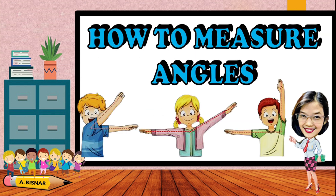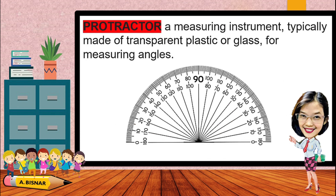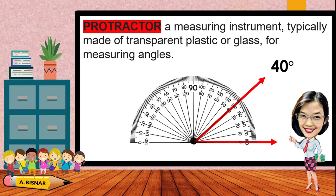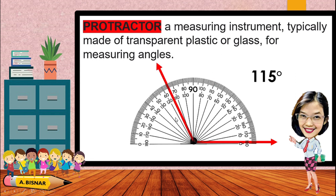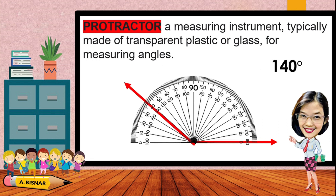Now let us learn how to measure angles. This is a protractor — a measuring instrument typically made of transparent plastic or glass, used for measuring angles. To use a protractor, align the vertex of the angle with the center of the protractor and read how wide the angle opens. For example, one angle measures 40 degrees, another measures 70 degrees, another is at 115 degrees (between 110 and 120), and another is at 140 degrees.